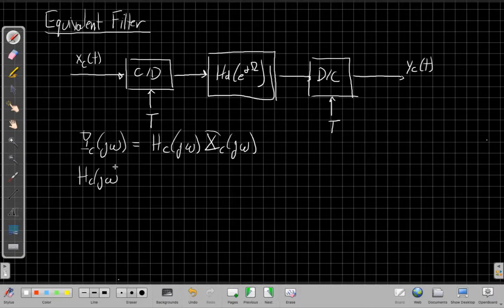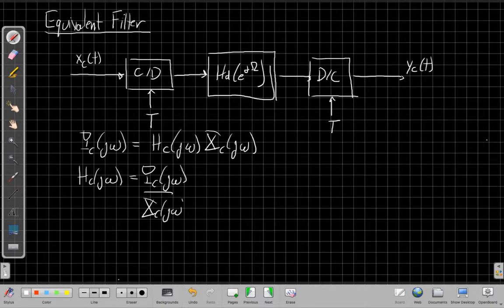It says, well, Hc of jω would be Y over X. And so this is the effective filter we would get...